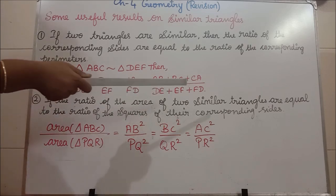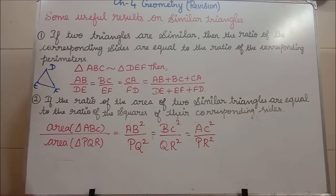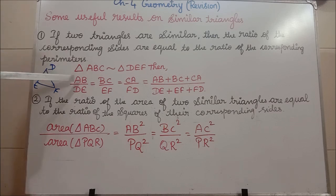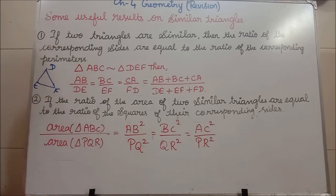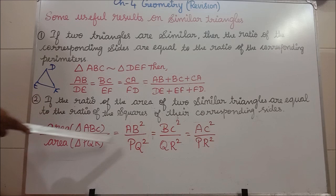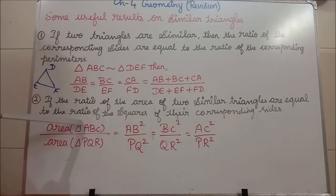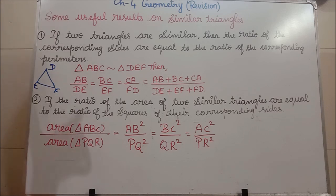Second result is about area. If the ratio of the areas of two similar triangles is given, it equals the ratio of the square of the corresponding sides: AB² divided by PQ² equals BC² divided by QR² equals AC² divided by PR². Both results are very important — if the question gives perimeter, apply the first rule; if it gives area, apply this rule.